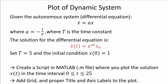In this example we will go through a more advanced plotting example. Assume we have a differential equation where a equals minus 1 over tau, where tau is a time constant. The solution to this differential equation is the function we want to plot. We set tau equals 5 and the initial condition x0 equals 1. We want to create a MATLAB script — a so-called M-file — to plot this function in the time interval from 0 to 25.